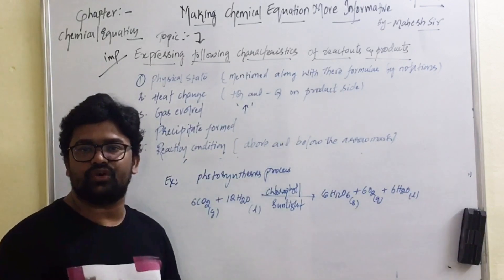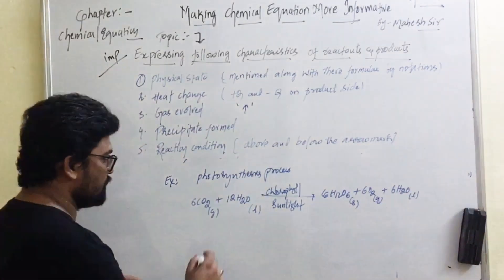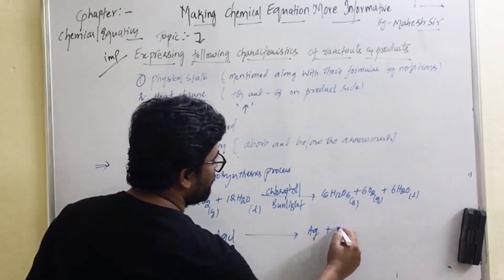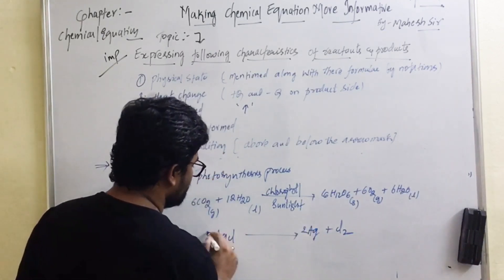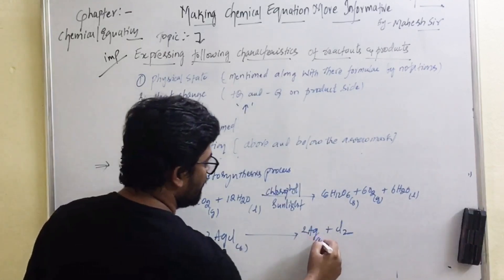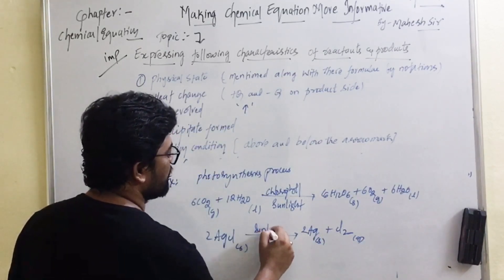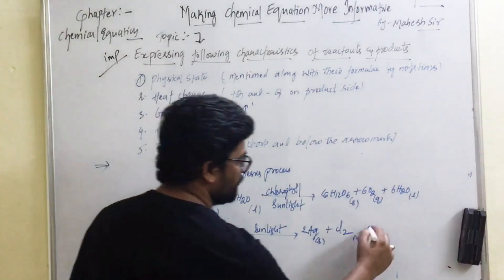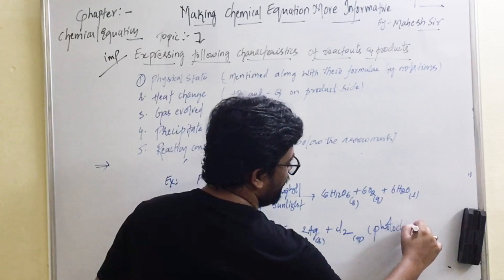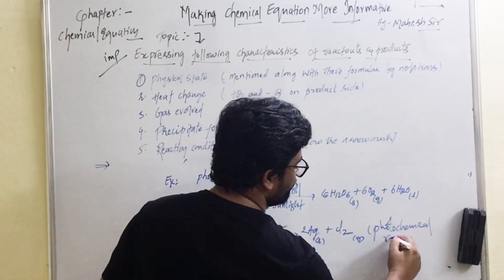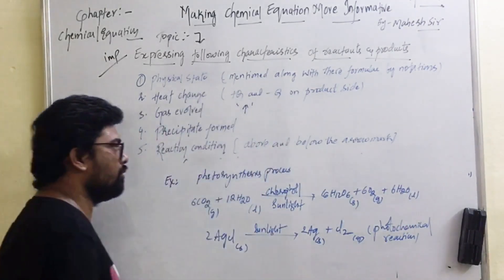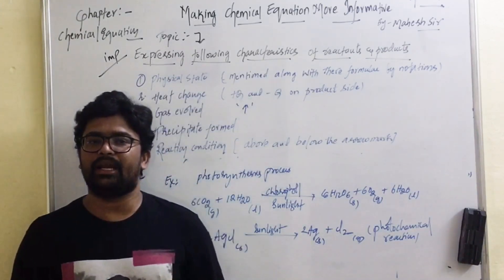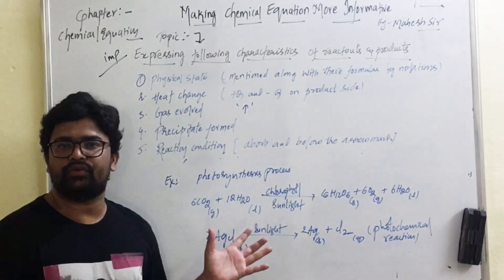Some reactions take place in the presence of sunlight, like photochemical reactions, and these are also a type of decomposition reaction. Such reaction conditions are represented above and below the arrow mark. This is how we make chemical equations more informative. I hope this concept is very clear for you all.